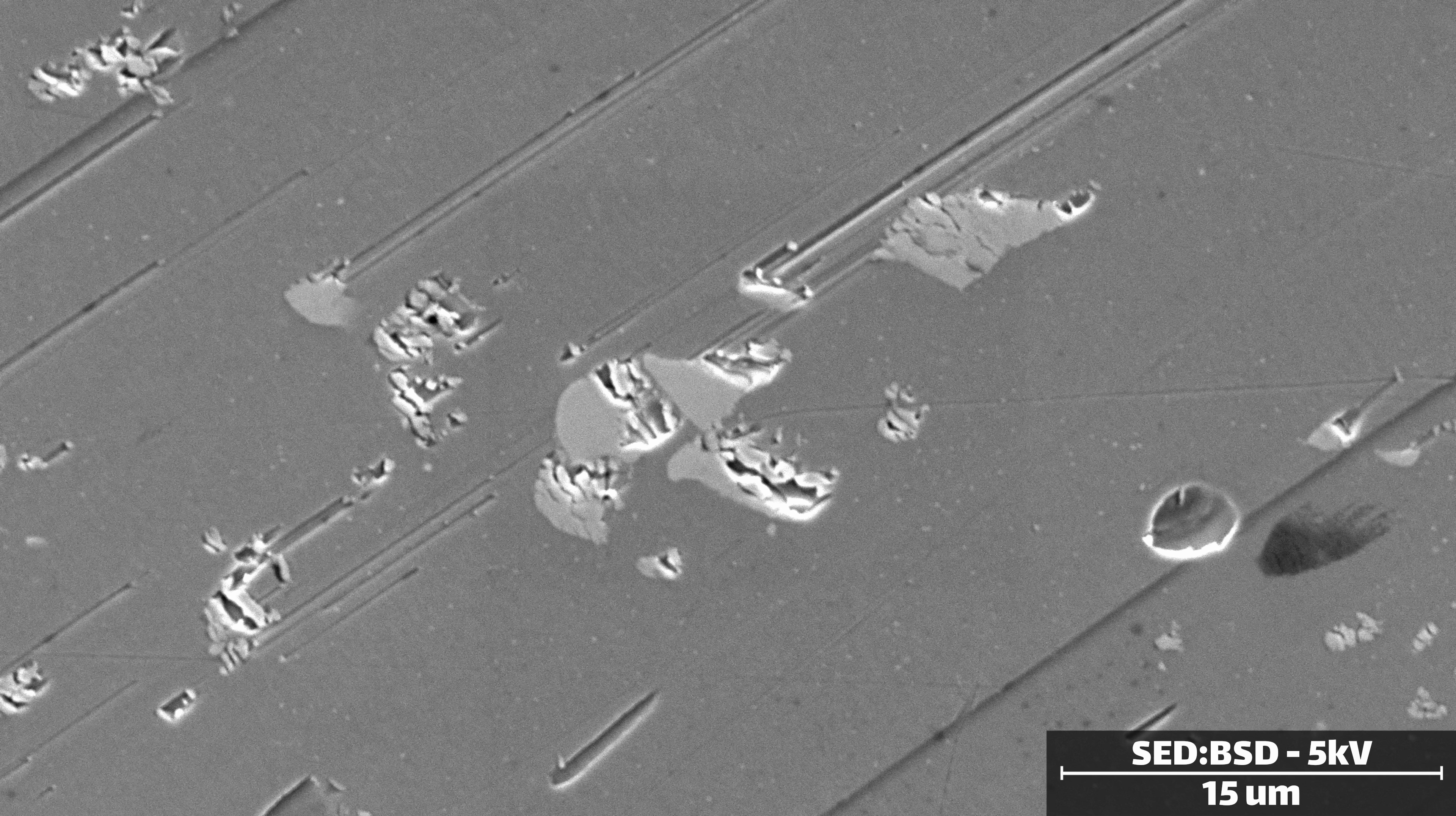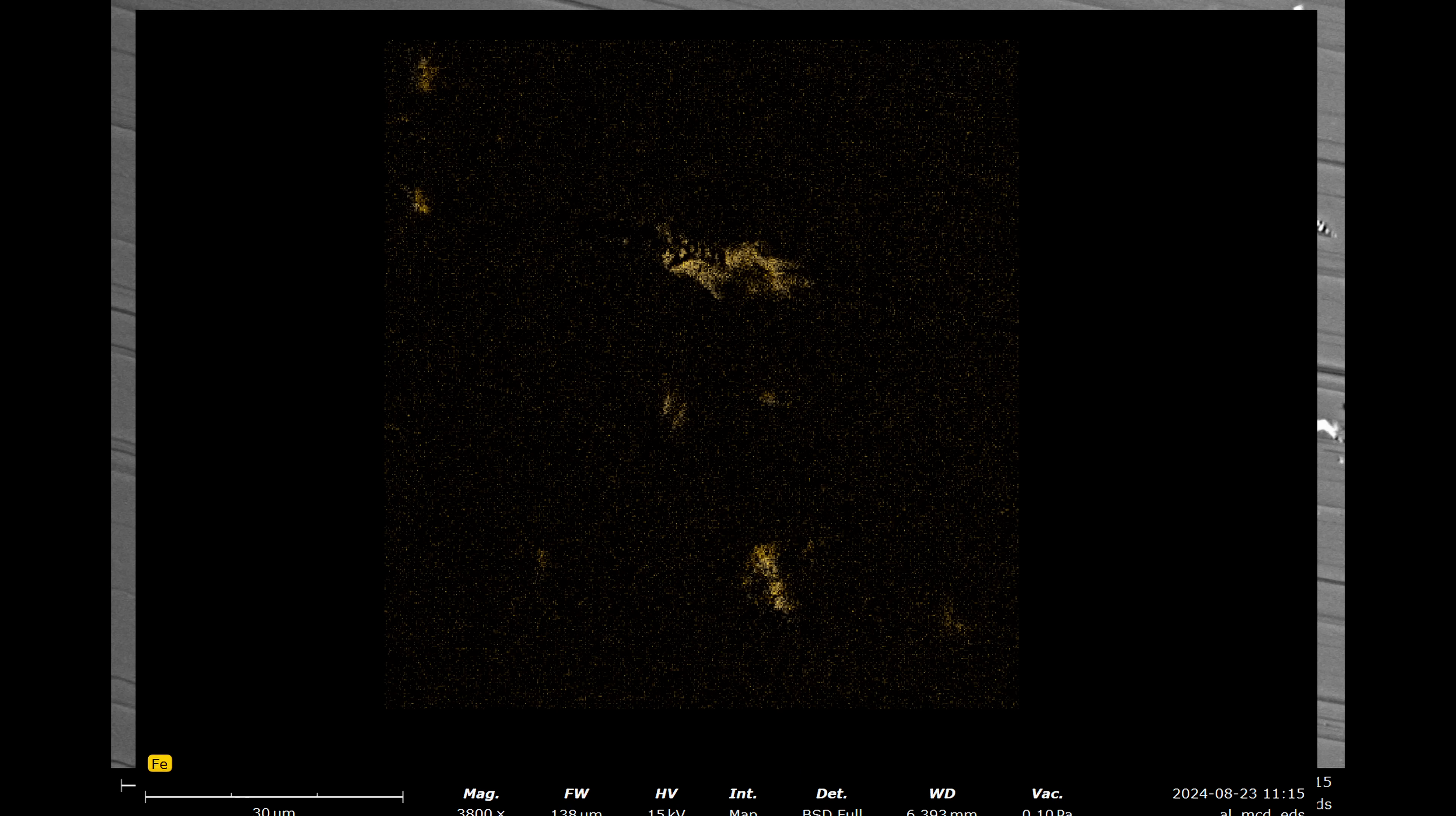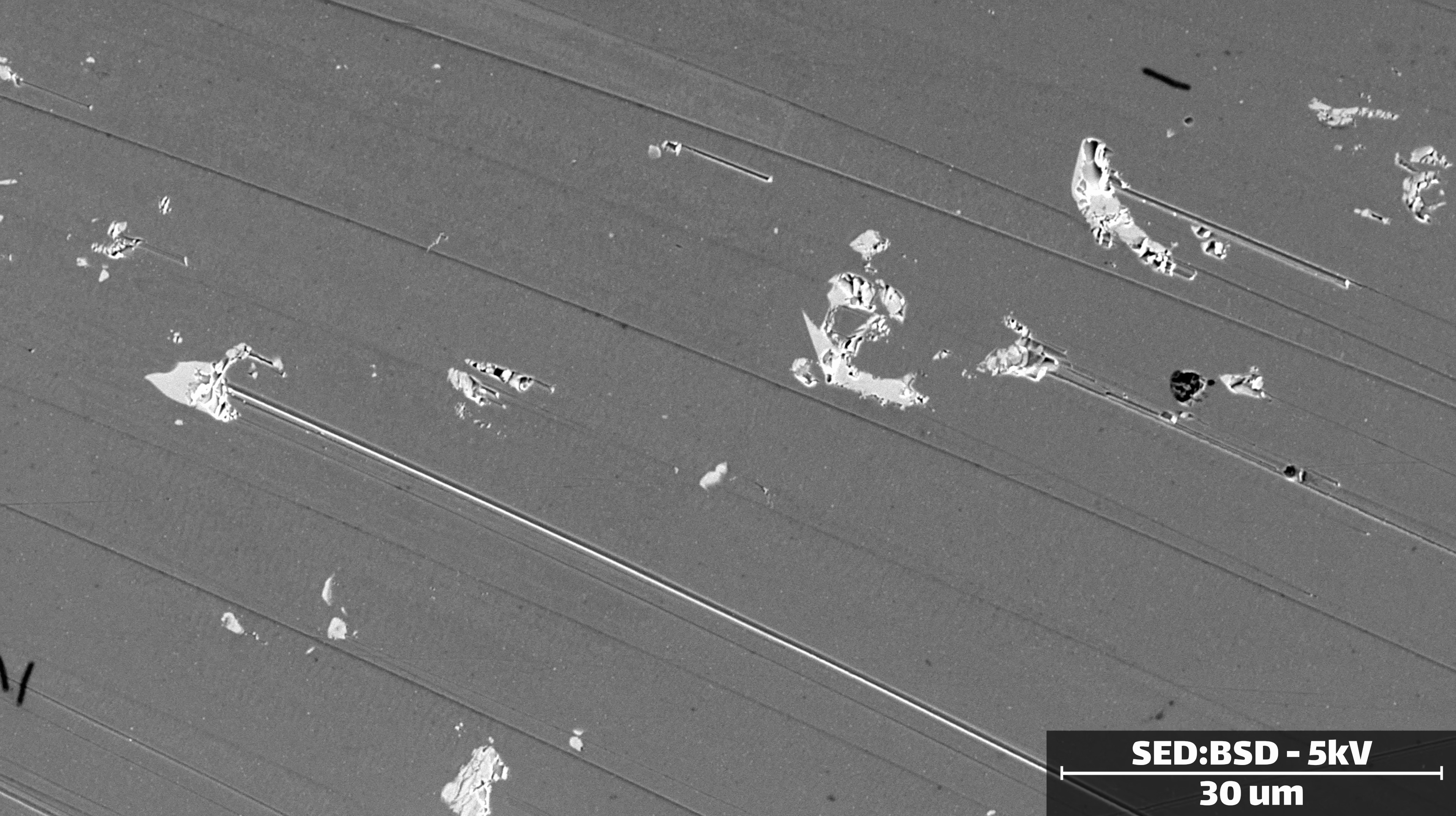We can also see these areas where the material tore out and it looks like it got dragged across the surface. They almost always originate from one of these crystalline pockets of material. If we look at that with the element detector, we can see they're enriched in iron and silicon. This aluminum alloy is 7075, which does include iron and silicon in small percentages. So I think these are just enriched inclusions of those elements. And instead of cutting, they get dragged across the soft aluminum surface.